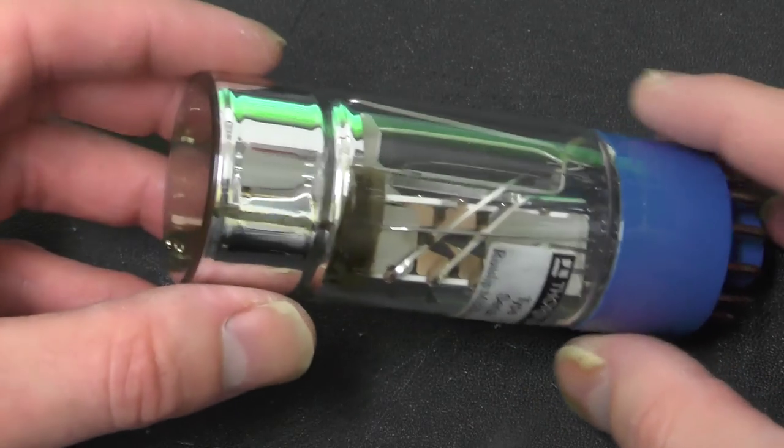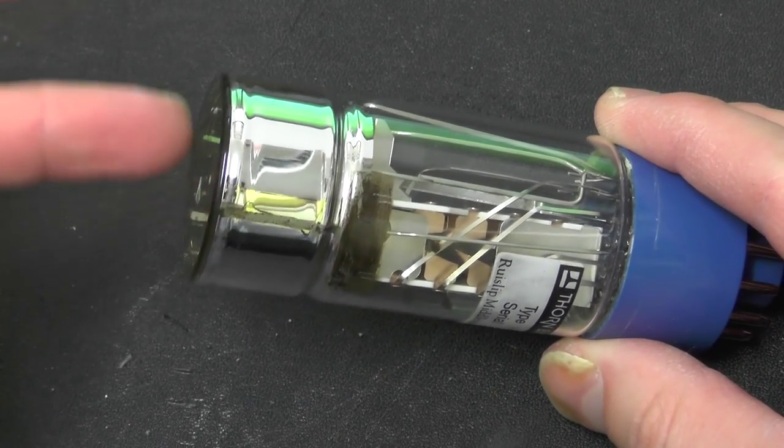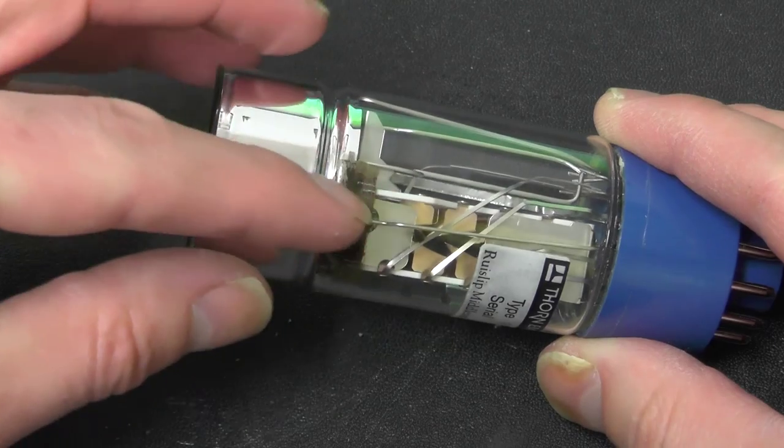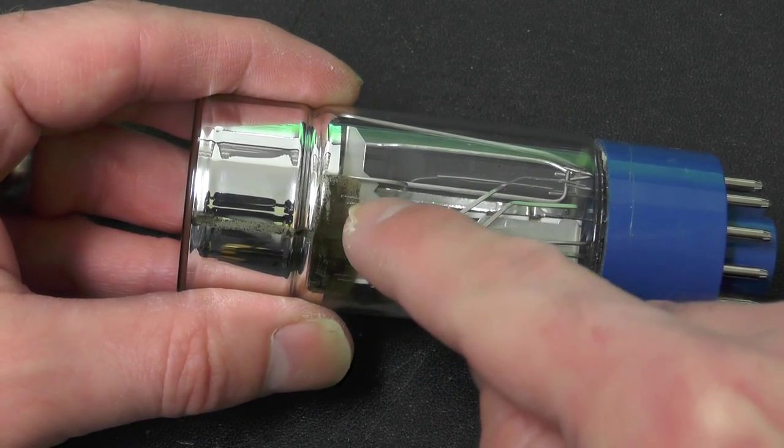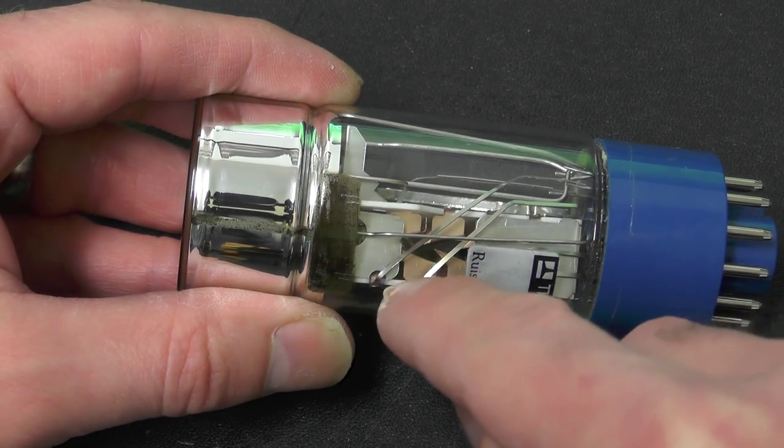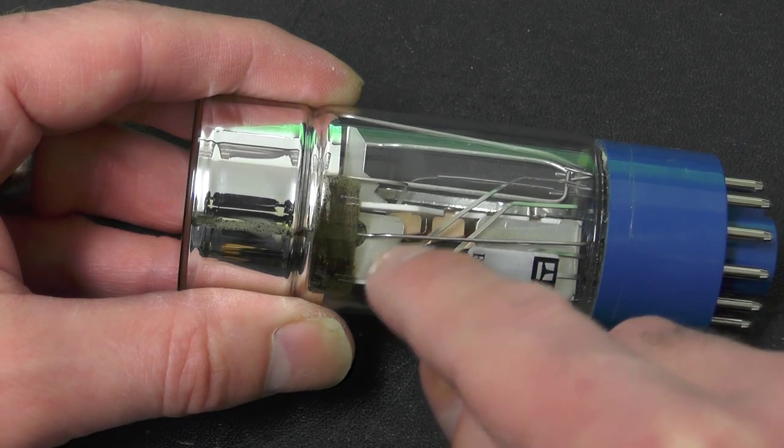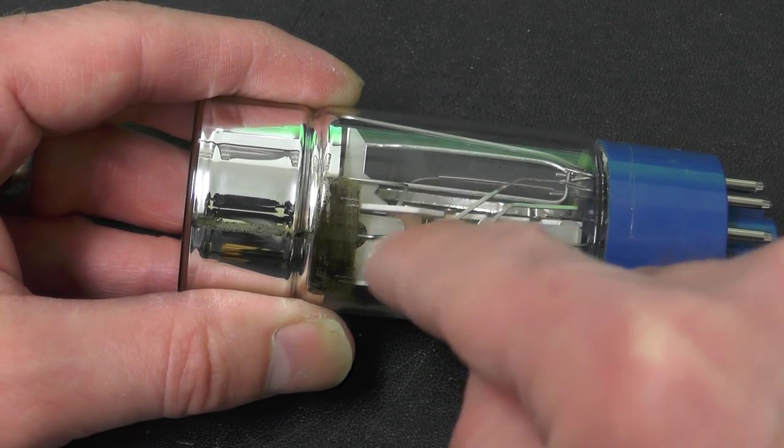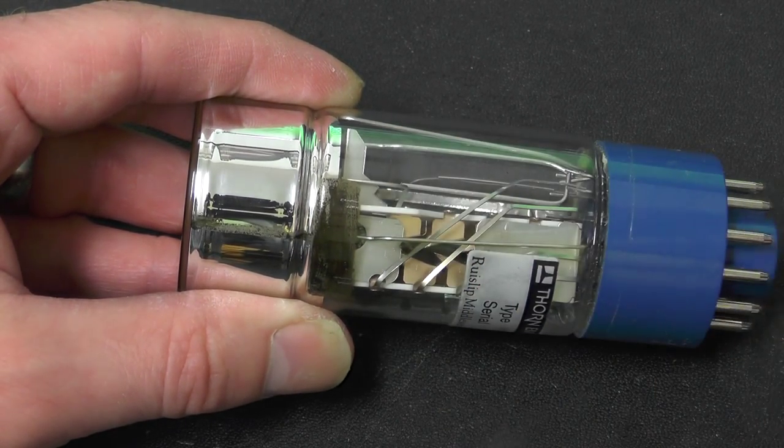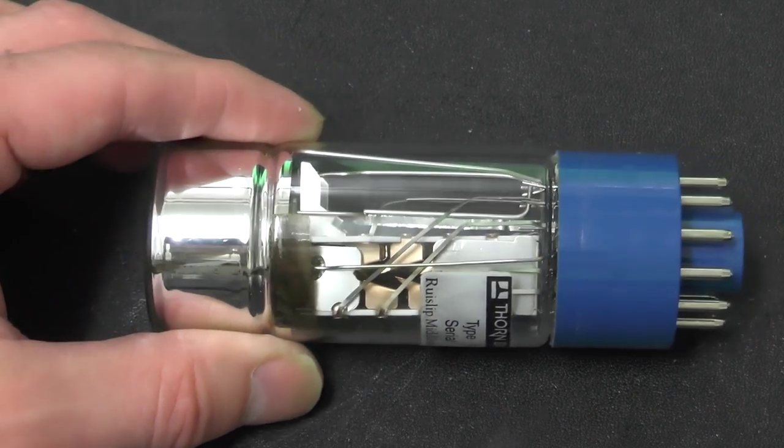So that's all fairly logical and straightforward. You've got the photon coming in, electron is emitted, it then hits the first dynode, more electrons come off, hit the second dynode, more electrons come off and it slowly avalanches and creates a cascade producing the signal.